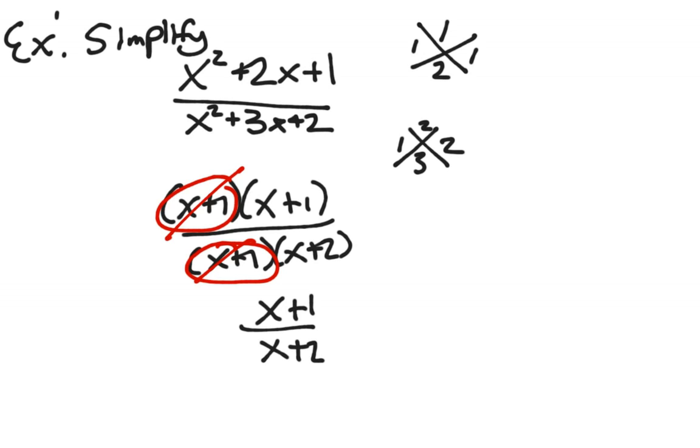This is my final answer. I can't simplify it any further. You might be tempted to try to simplify these x's here. But remember our conditions. You need to have multiplication happening. Right now, we have addition happening.